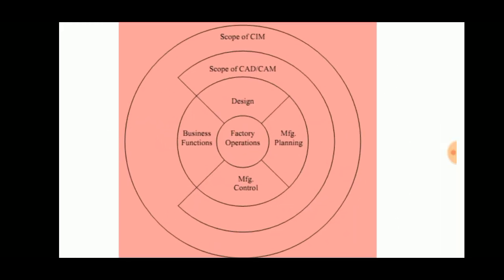This chart explains CIM. Factory operations consist of business functions such as market research, which is developed into a design and sent to the manufacturing department, where products are quality-checked in manufacturing control. Design, manufacturing planning, and manufacturing control fall under the scope of CAD and CAM. Business functions, design, manufacturing, and manufacturing control all come under the scope of CIM.